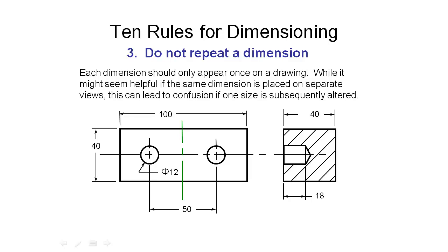The problem can come from if you repeat a dimension and someone comes along later and wants to change the design slightly. Maybe they will change one of the dimensions and then your drawing will be inconsistent because you've got two different dimensions on the drawing for the same thing.